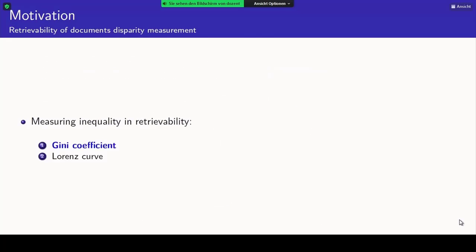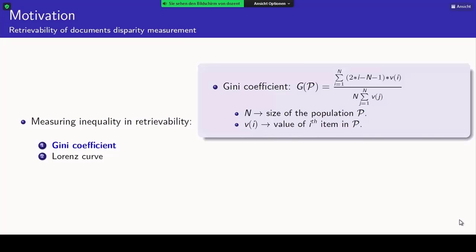To measure this concept with a number, there are two ways. One is using the Gini coefficient. Gini coefficient, for a given population, is computed using a mathematical formula, computing the disparity or imbalance of the values V in a population P. A Gini coefficient will always lie between 0 and 1, proportional to the inequality inherent in the population.